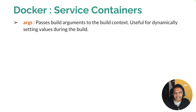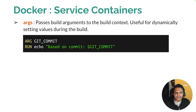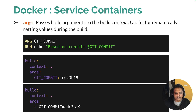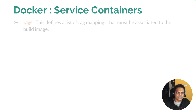Sometimes we need to pass build arguments to our build context — these are dynamic fields. Whenever you need something dynamic when building your image, you define it within args. For example, in the Dockerfile you may have ARG GIT_COMMIT, and then a RUN echo command using that variable. In your Docker Compose, you define build, context, and then args where you list the arguments and their values. The args can be defined as a map (key-value pairs) or as a list — the syntax is the same either way.